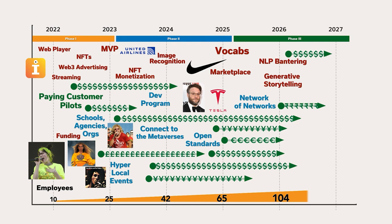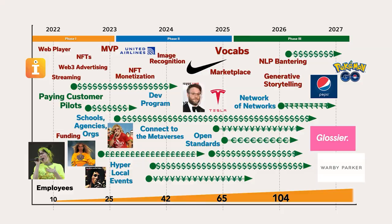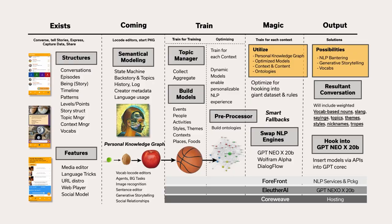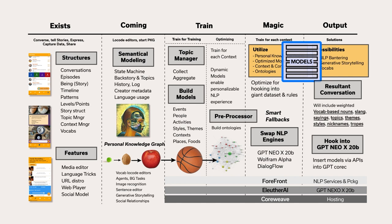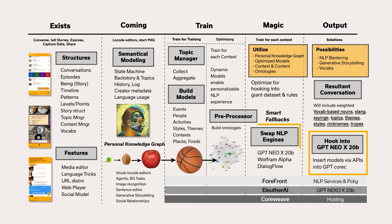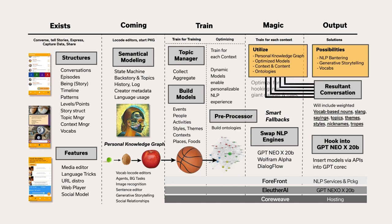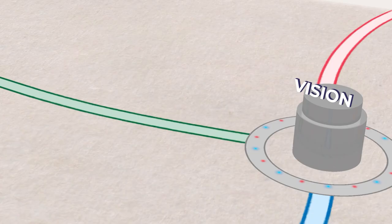Our paying customers will interact with celebs and high-profile brands, providing a great opportunity for our creators to make money. This final section of our algorithm shows the magic behind our AI storytelling technology. The whole purpose of training the models and constructing ontologies is to insert these rules and data into a large NLP engine called GPT-NEO-X20B. Instagate will swap NLP engines based upon context and insert the appropriate data into the resultant conversation, leading to NLP bantering, generative storytelling, and vocabs — personalized languages created by creators that can be bought and sold in an Instagate marketplace.